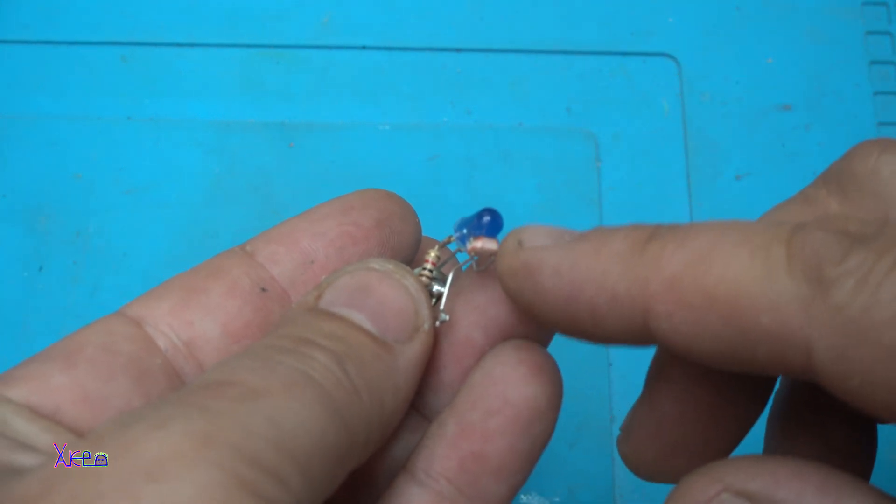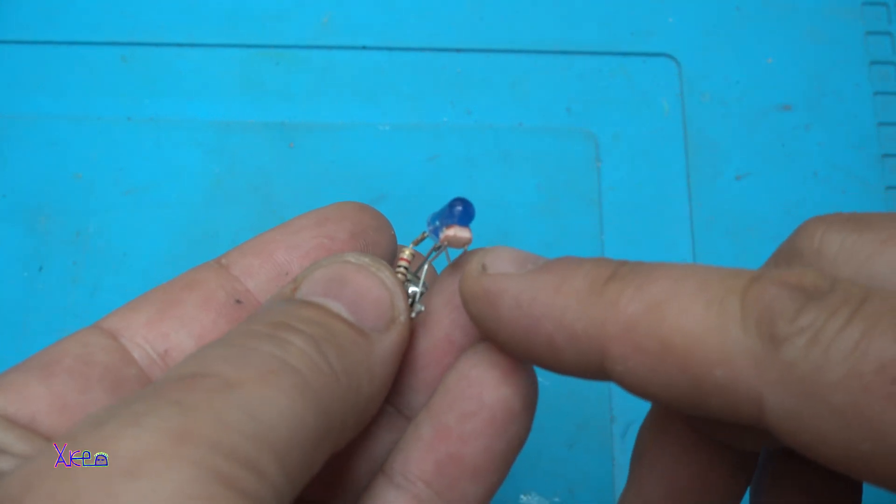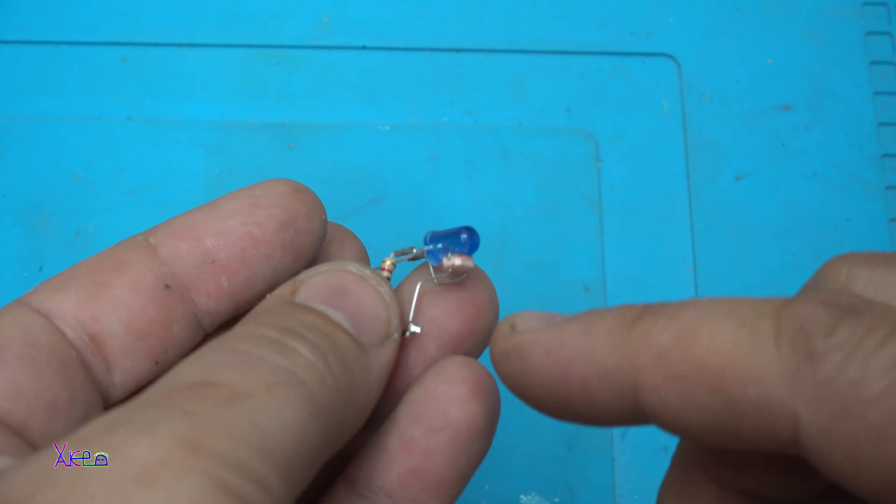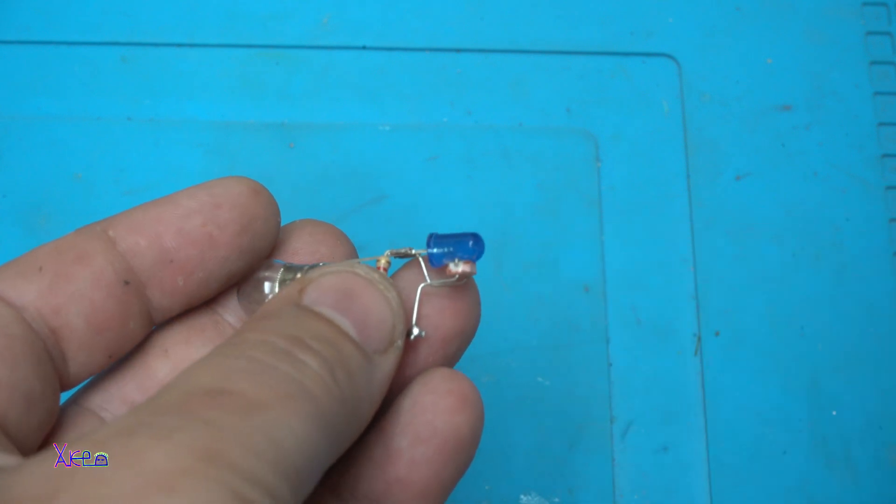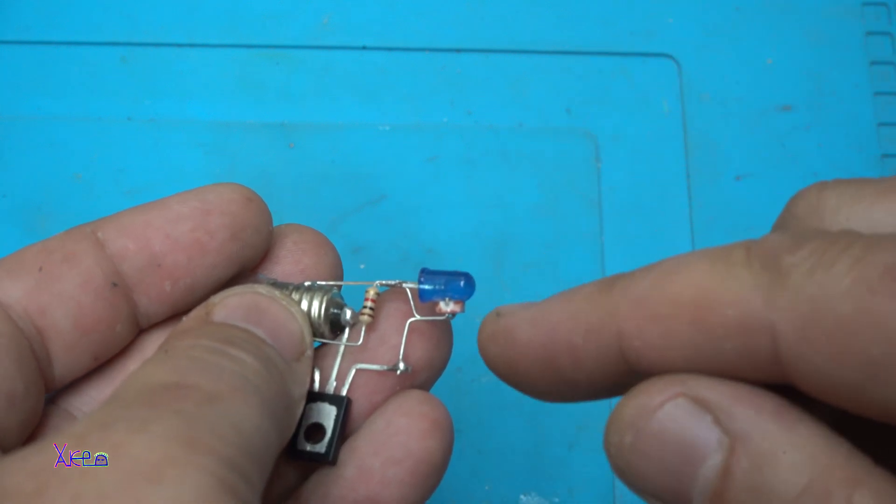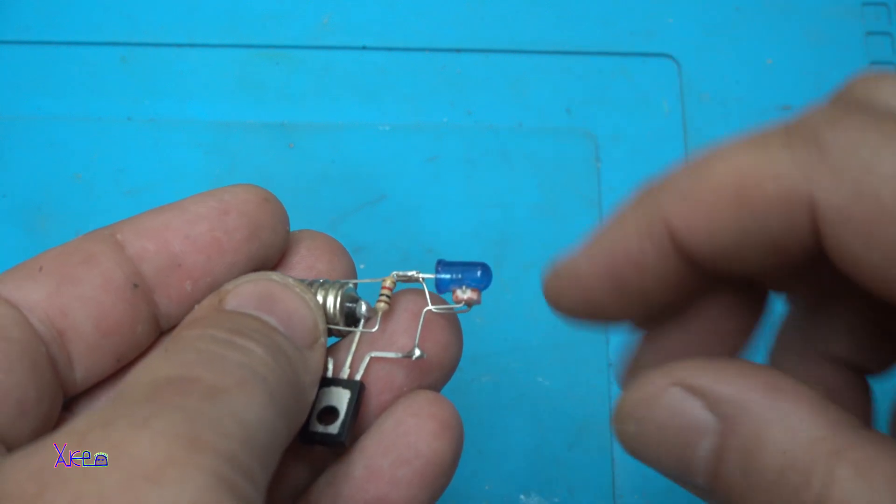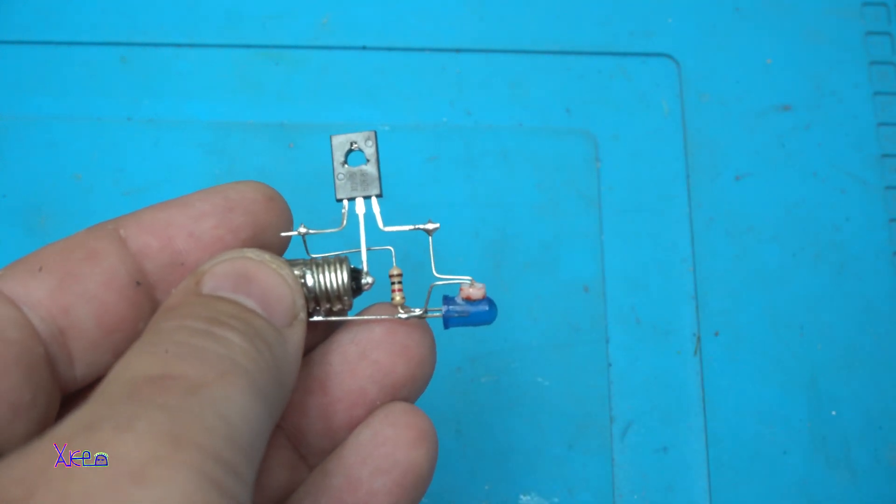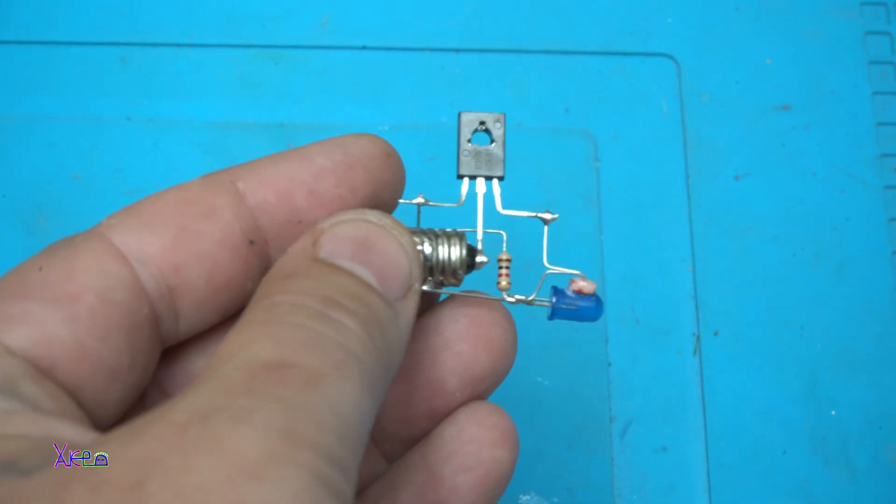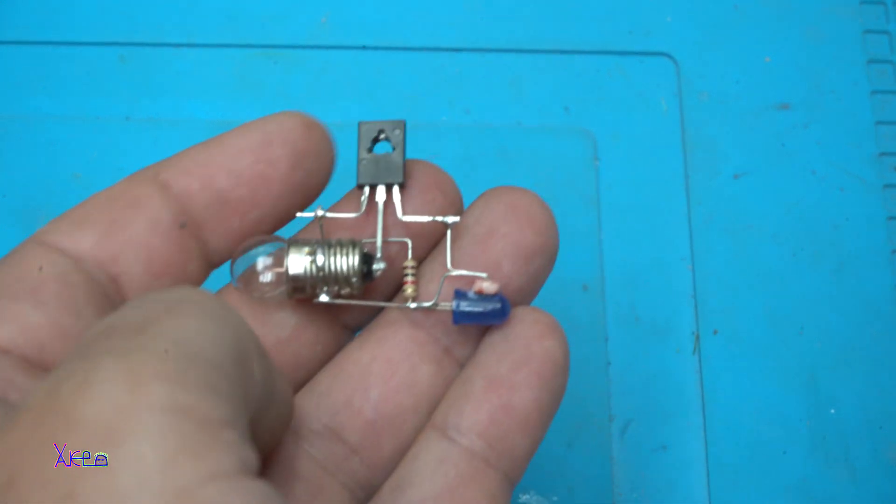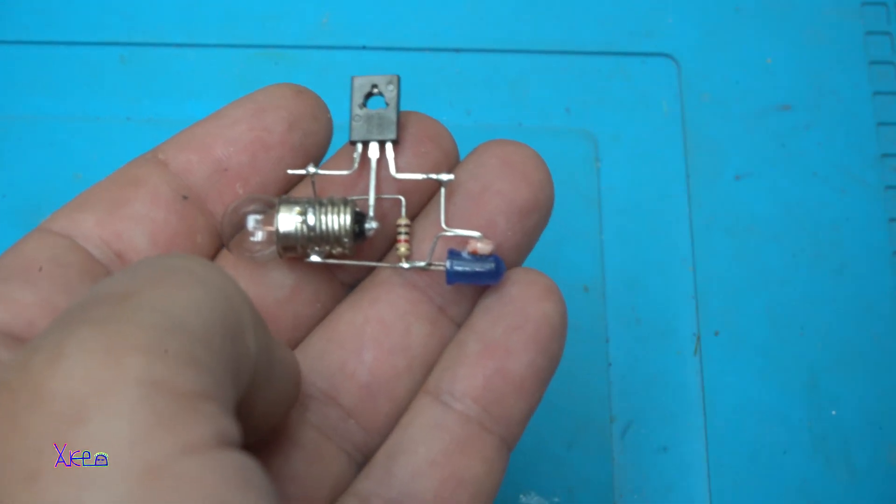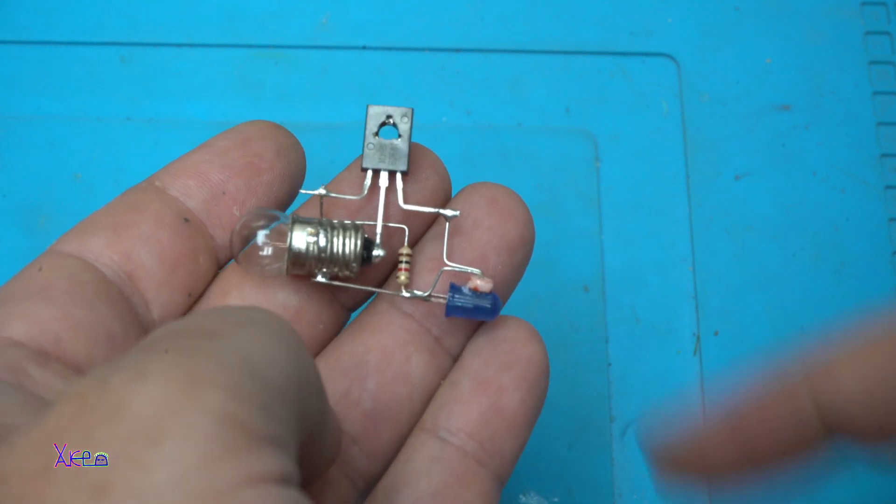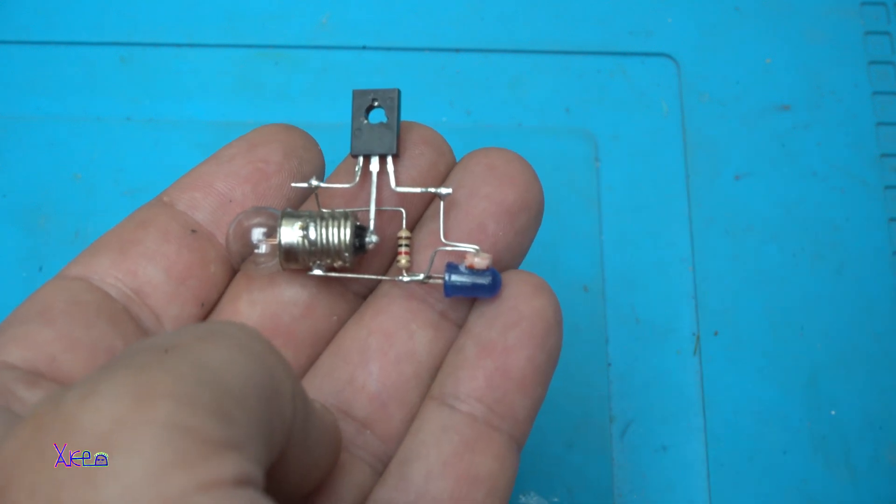That is a nice trick. The photo resistor is fixed on the LED and detecting light. That self-blinking LED will change the value to the base of the transistor. Very simple and unique way to make a blinker for ordinary light bulbs.